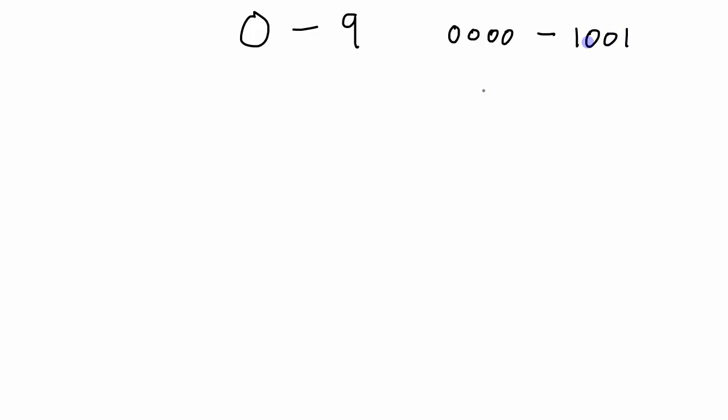We want to do a counter that counts from 0 up to 9, or in binary that's from 0000 up to 1001. So we are going to need a 4-bit counter for this design, and a 4-bit counter is going to require four flip-flops. That's going to come into play in a second.